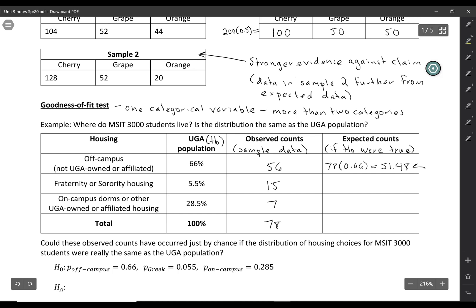So even though they're called expected counts, we really mean what we expect on average. So don't round these. Okay, so we would have expected 51.48 to live off campus. Our actual data was a little higher than that. Similarly, we can calculate the others. We would have expected 4.29 to live in fraternity or sorority housing. Our sample data was actually a good bit higher than that. And we would have expected 22.23 to live on campus. So our sample data was a good bit lower.